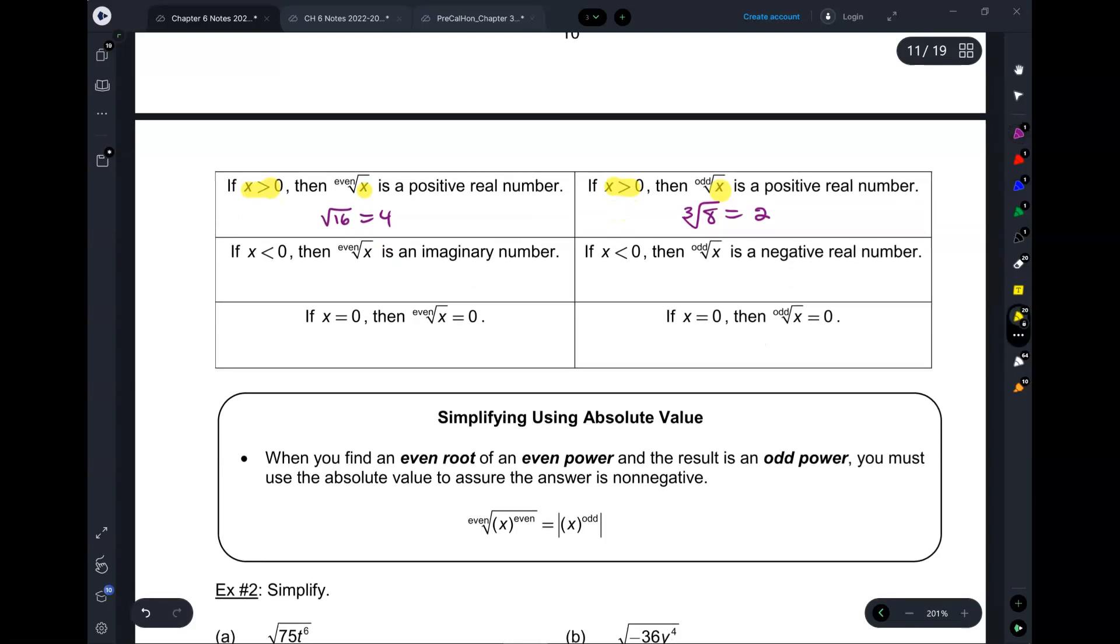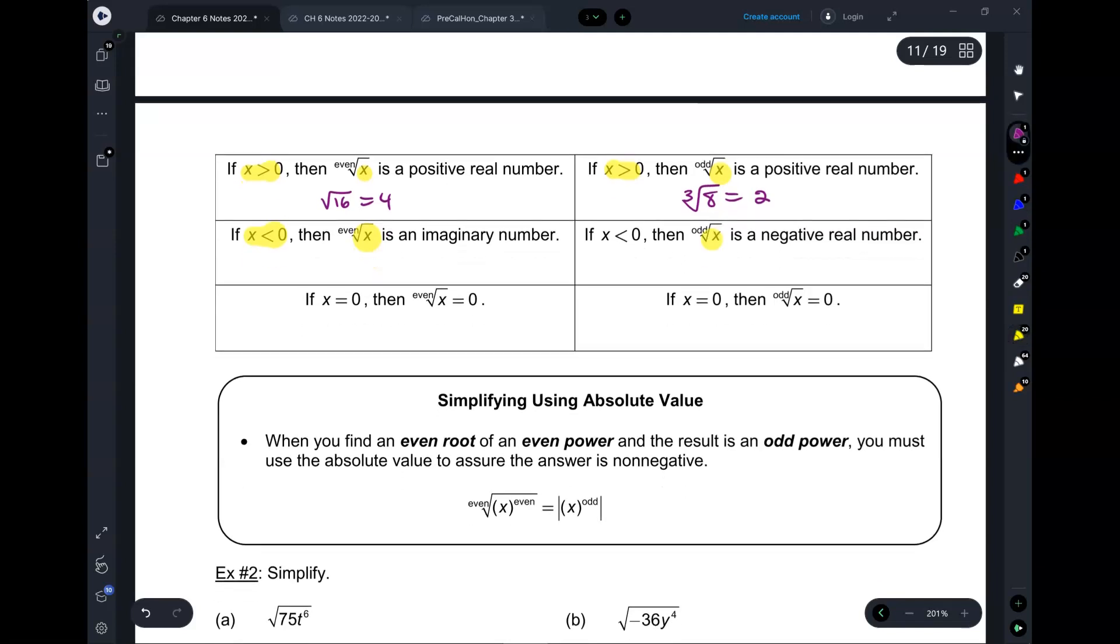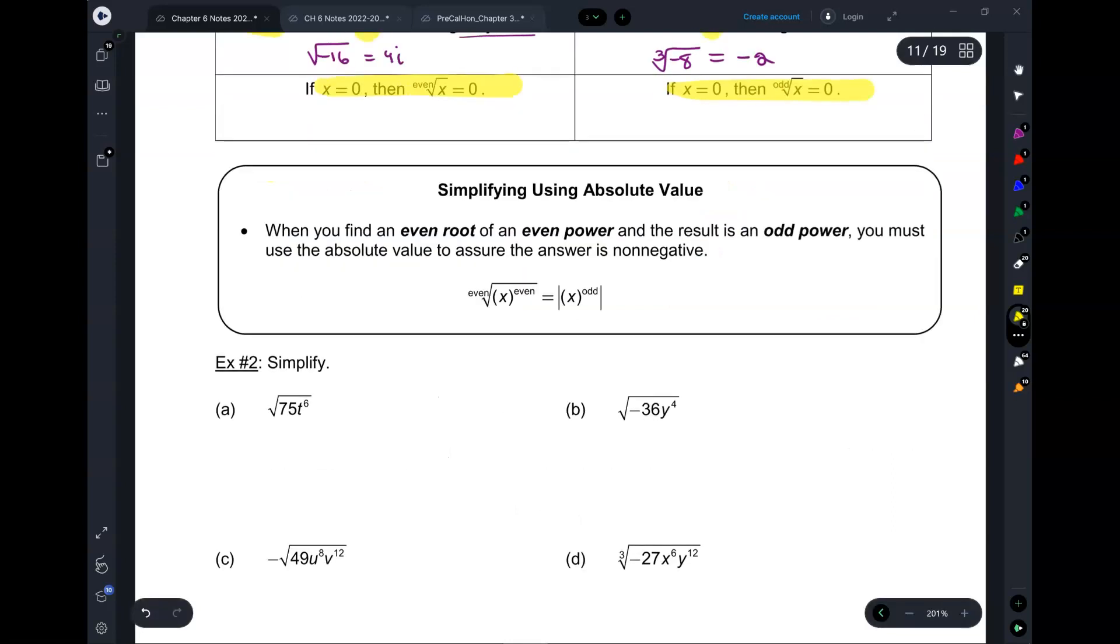Now, what if x is less than 0? What if these numbers are now negative? Then, if you have an even index, for example, if you have the square root of negative 16, then you get an imaginary number, 4i. And then, if it's odd, then you just get a negative real number. And then when x is 0, then any root of 0 is just 0. If x is 0, it doesn't matter if it's even or odd, it's just 0.